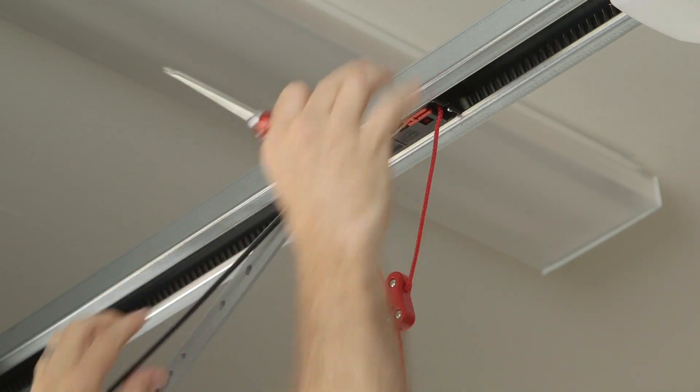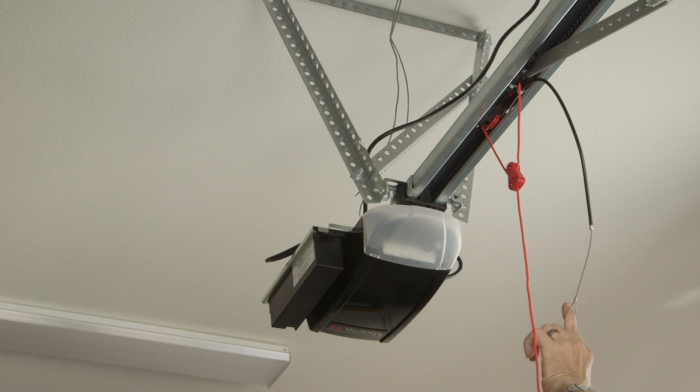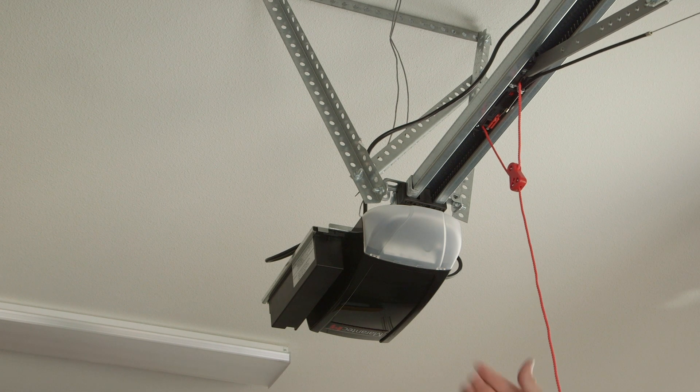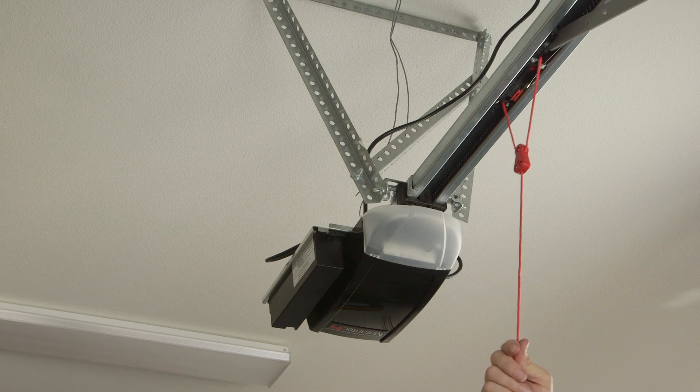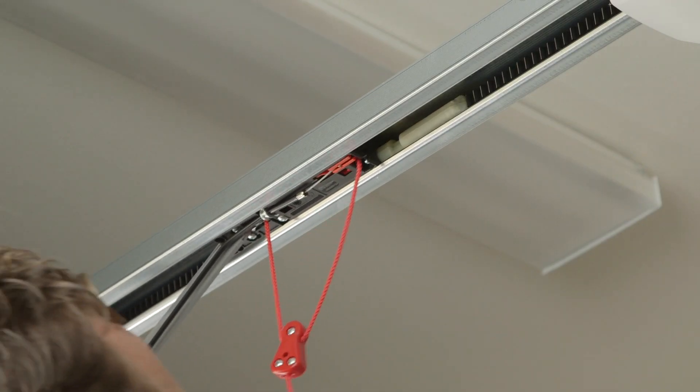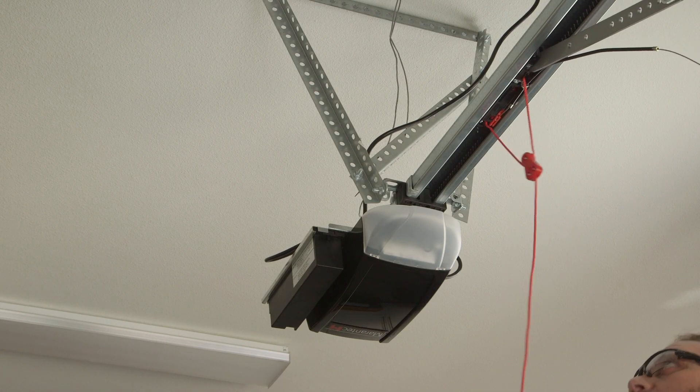And then on the end of that vault lock adapter kit, the cable is looped and that loop will connect any vault lock that you are accustomed to using. When you pull that, it directly pulls that slot forward and disengages the garage door opener.